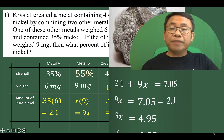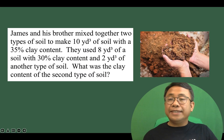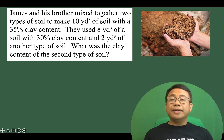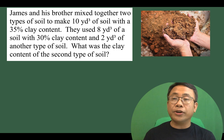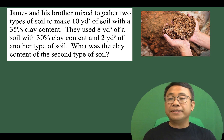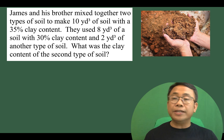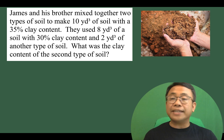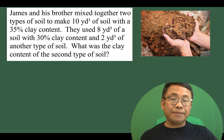Let's go to problem number 2. James and his brother mixed together two types of soil to make 10 cubic yards of soil with 35% clay content. They used 8 cubic yards of a soil with 30% clay content, and 2 cubic yards of another type of soil. What was the clay content of the second type of soil?